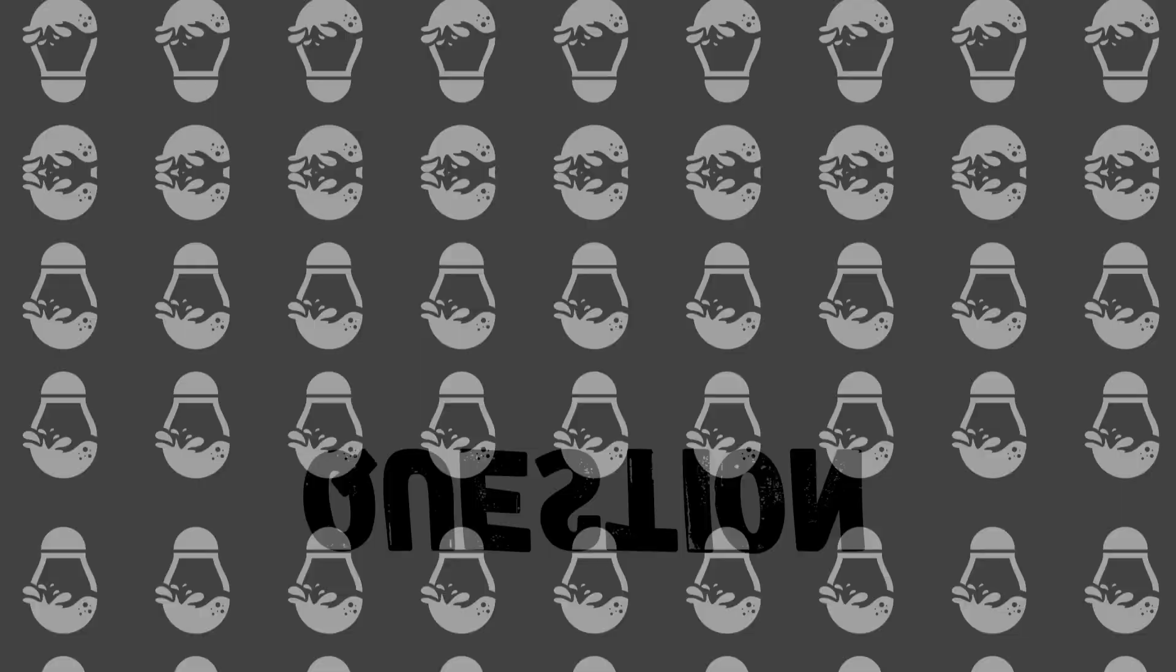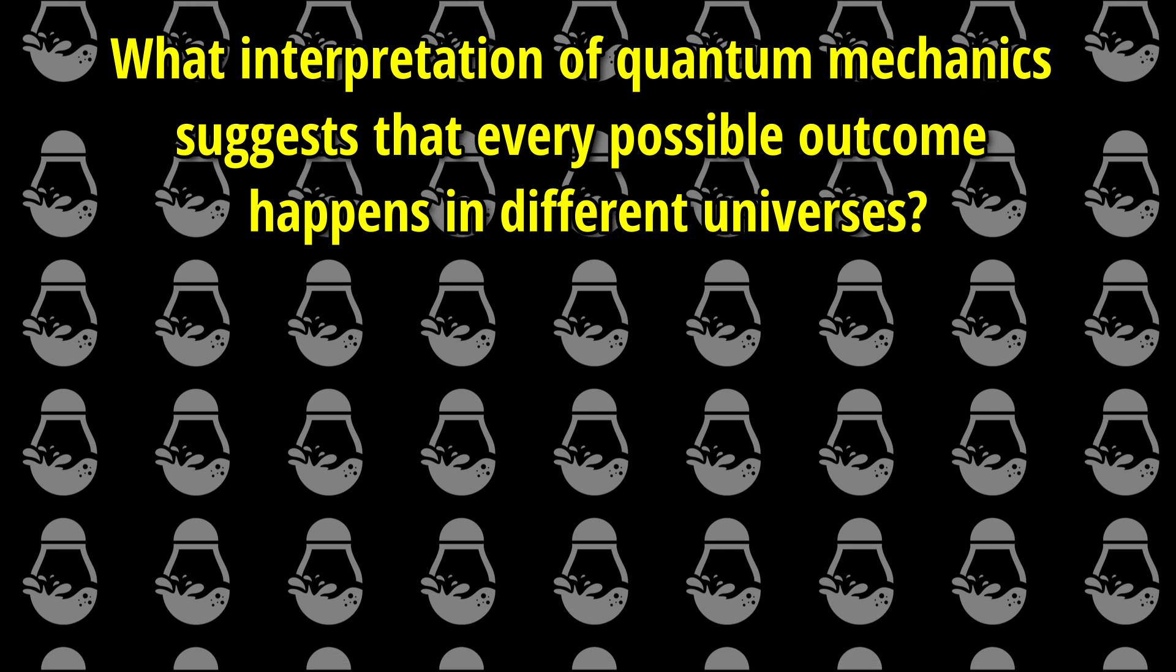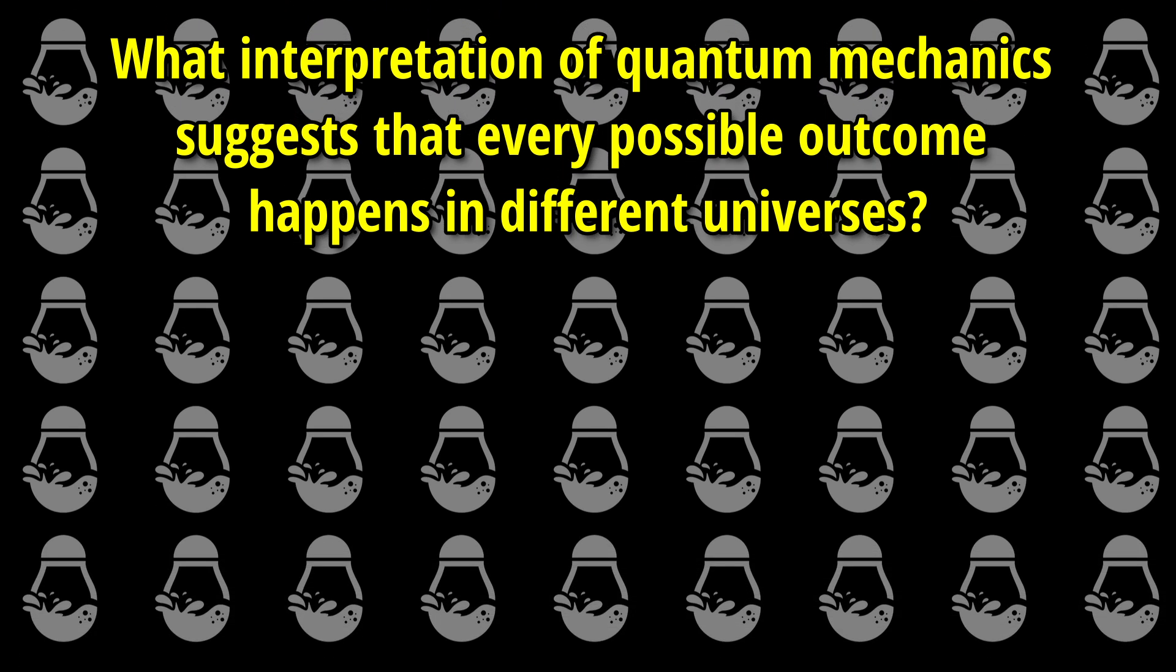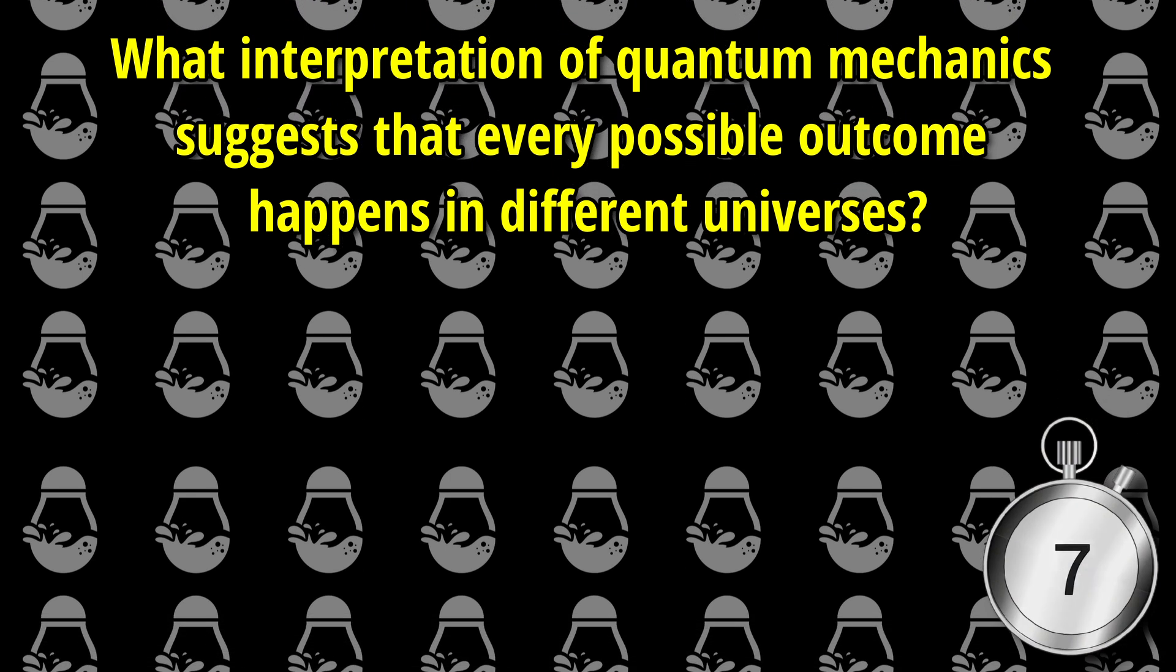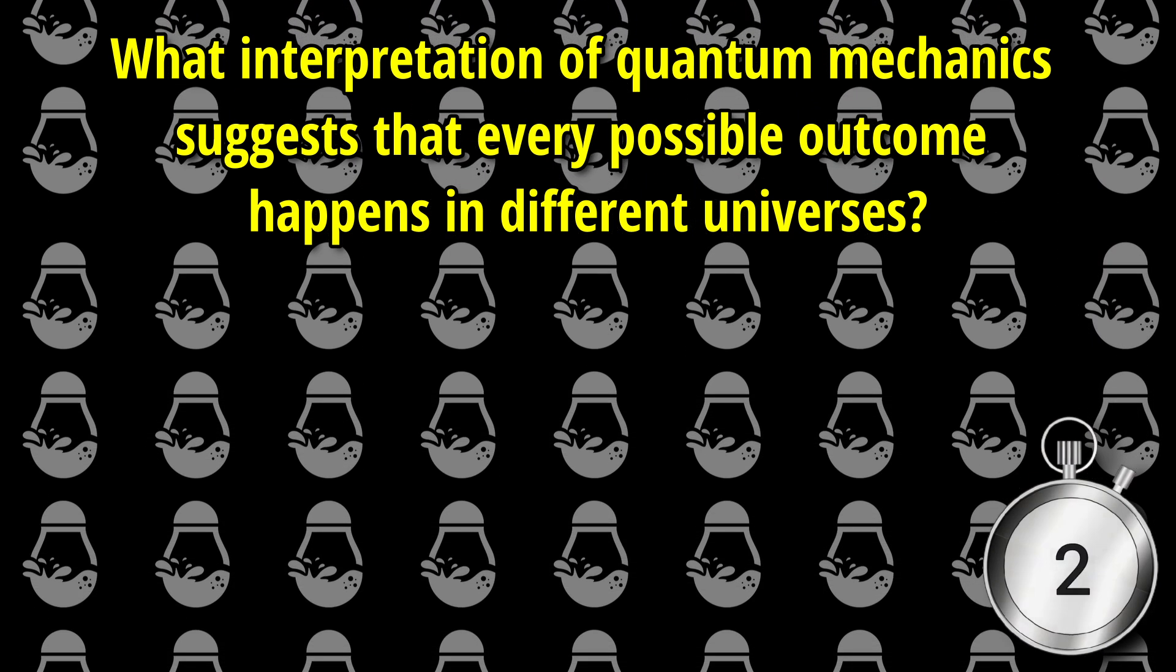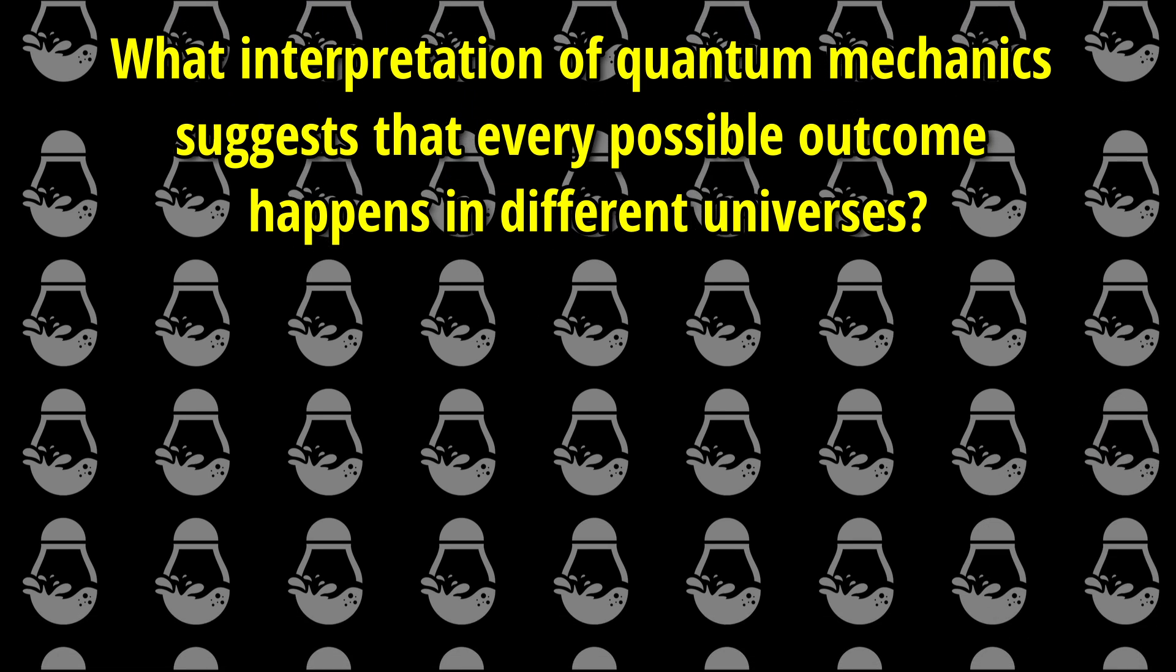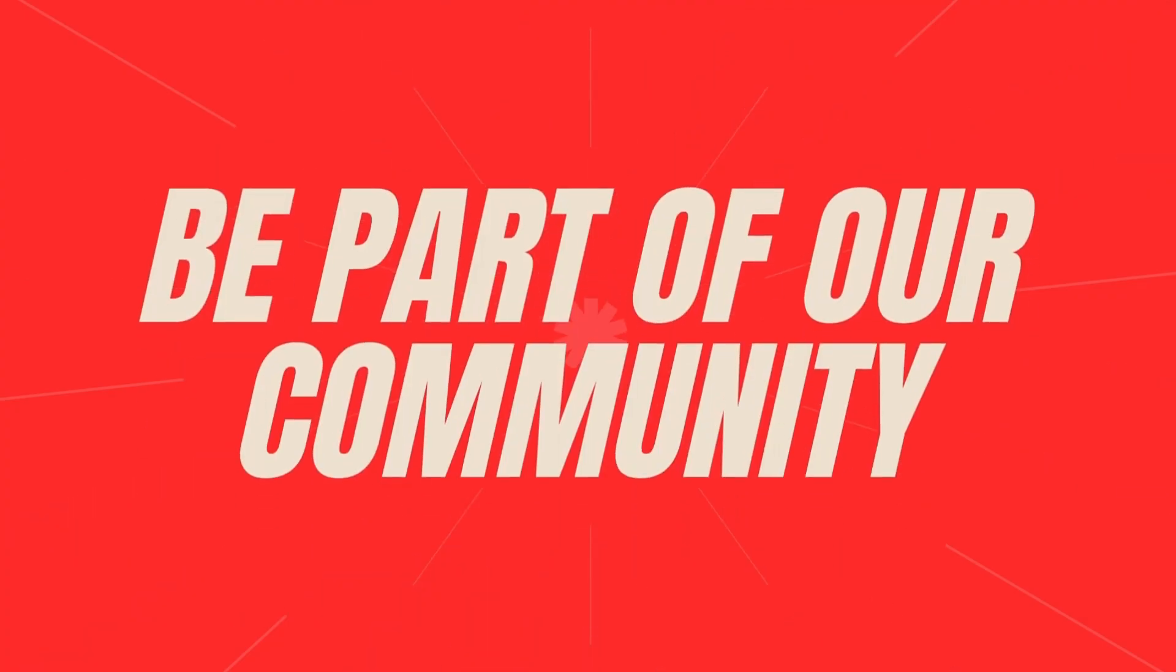Final question. One interpretation of quantum mechanics suggests that every possible outcome happens in different universes. The answer is the many-worlds interpretation.